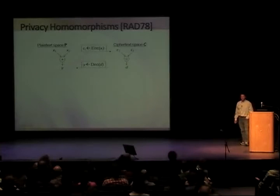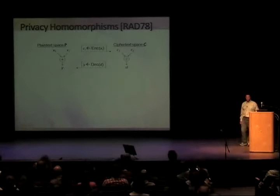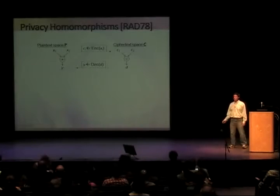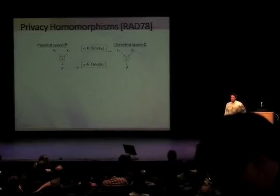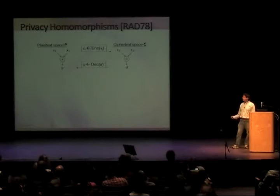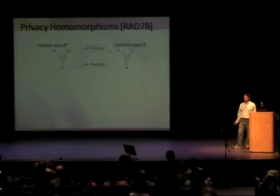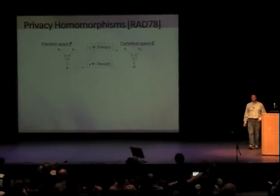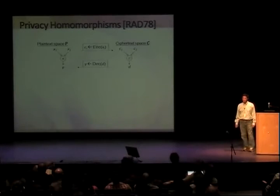The possibility of an encryption scheme like this was observed shortly after the invention of public-key cryptography by Rivest, Adleman, and Dertouzos. They proposed the notion of privacy homomorphism — the idea that we have a plaintext space, a ciphertext space, and we want an operation on ciphertexts that corresponds to an operation on plaintexts. If you encrypt x1 and x2, apply this operation on the ciphertexts, and decrypt, you get something like x1 times x2 or whatever the star operation is.